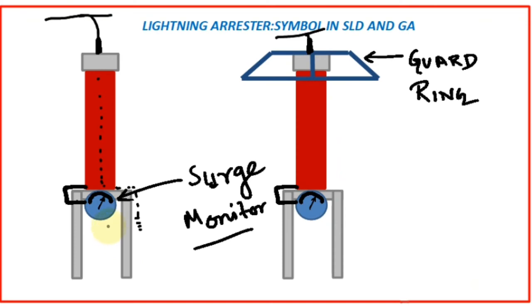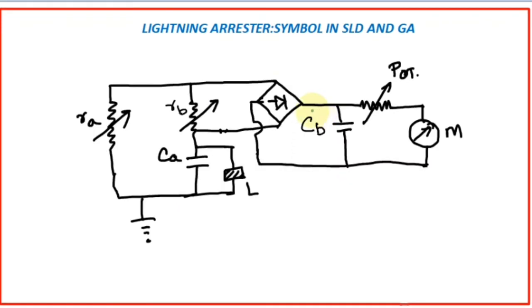Now we will see the circuit diagram of the leakage current monitor. This is the circuit diagram of the meter connected to the lightning arrestor — that is the surge meter or leakage current meter. It receives supply from the bottom of the lightning arrestor.